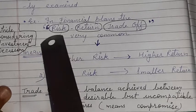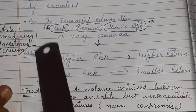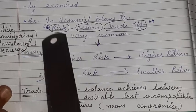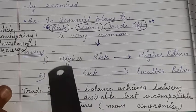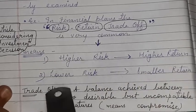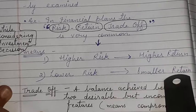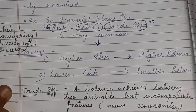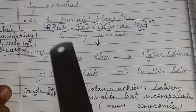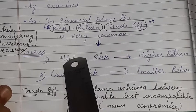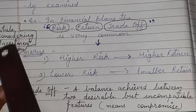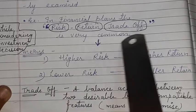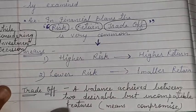Trade-off means a balance achieved between two desirable but incompatible features. Risk and return are incompatible features — both are desirable. Higher risk gives higher return, lower risk gives lower (smaller) return — this is called risk-return trade-off. This term is generally used in business, and whenever any investment decision is taken, this is always kept in mind.